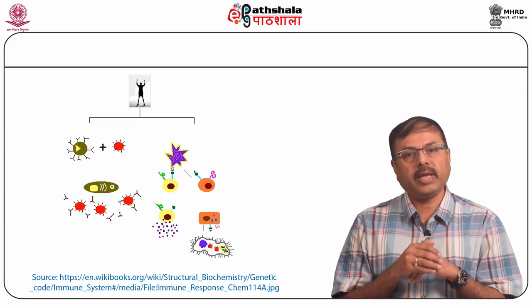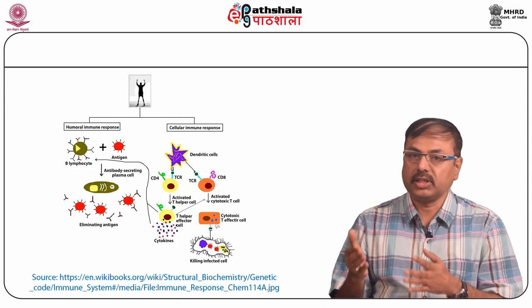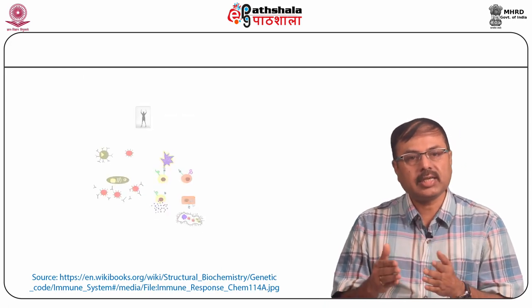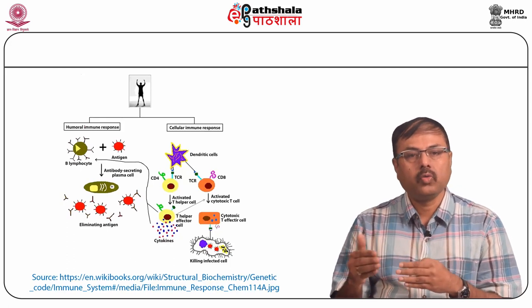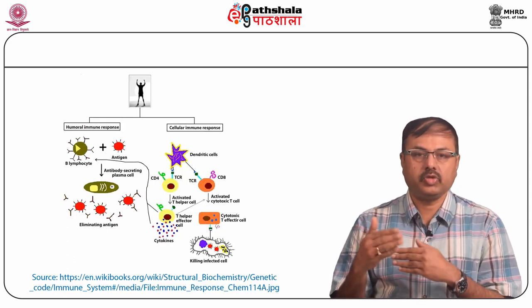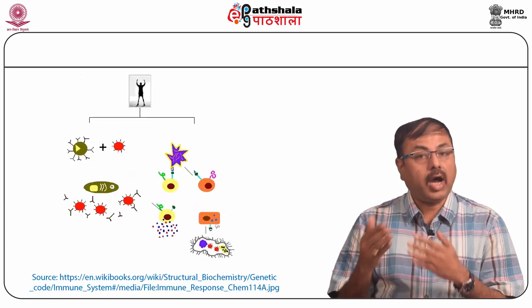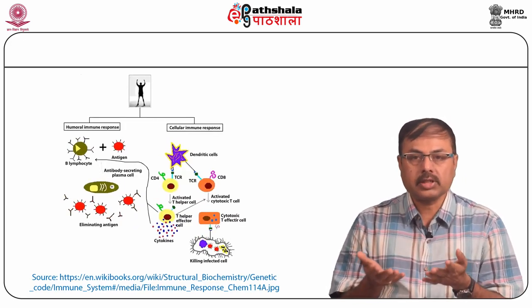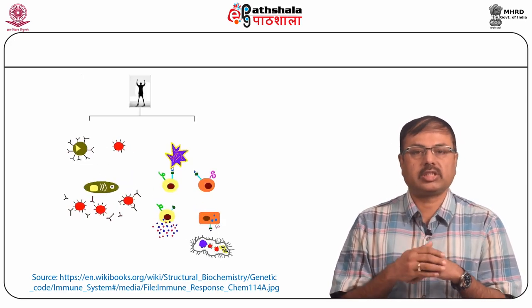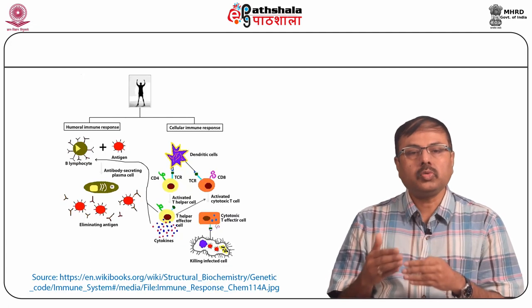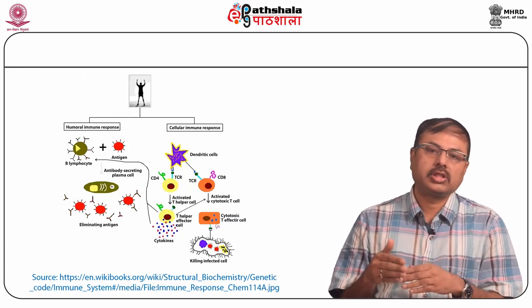The immune system is a complex and highly developed system, yet its mission is simple: to seek and kill invaders. If a person is born with a severely defective immune system, death from infection by a virus, bacterium, fungus or parasite will occur. A lack of immune system is also the basis for DiGeorge syndrome.